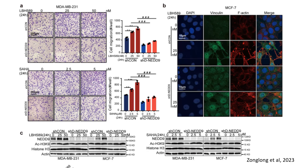In panel C, researchers confirmed the molecular basis through Western blot analysis. HDAC inhibitors LBH589 and Saha significantly increased NET9 protein levels and histone acetylation (acetylated H3K9) in MDA-MB231 and MCF7 cells. In contrast, cells with NET9 knockdown showed diminished NET9 expression and attenuated effects of HDAC inhibitors, supporting the hypothesis that NET9 is a critical mediator of HDAC-induced metastatic phenotypes. Knocking down NET9 significantly attenuates these effects, highlighting its central role in HDAC inhibitor-mediated invasiveness.